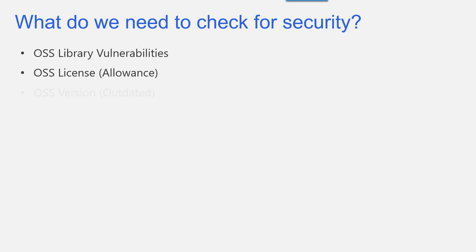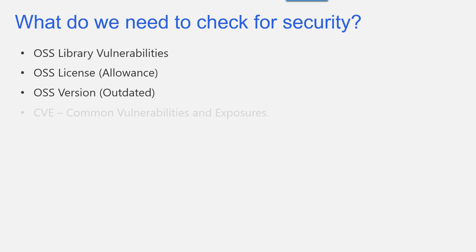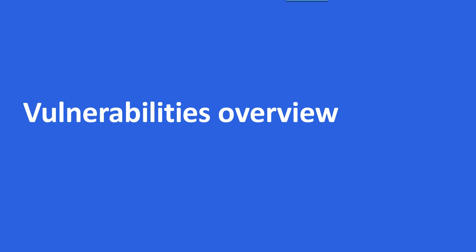We need to check for license allowance for open source libraries, because a license may not be permitted to ship with a commercial application. We also need to check the version of the library, because some libraries are outdated — no longer maintained — which means there is no response for fixing problems or issues, posing a risk to our project.